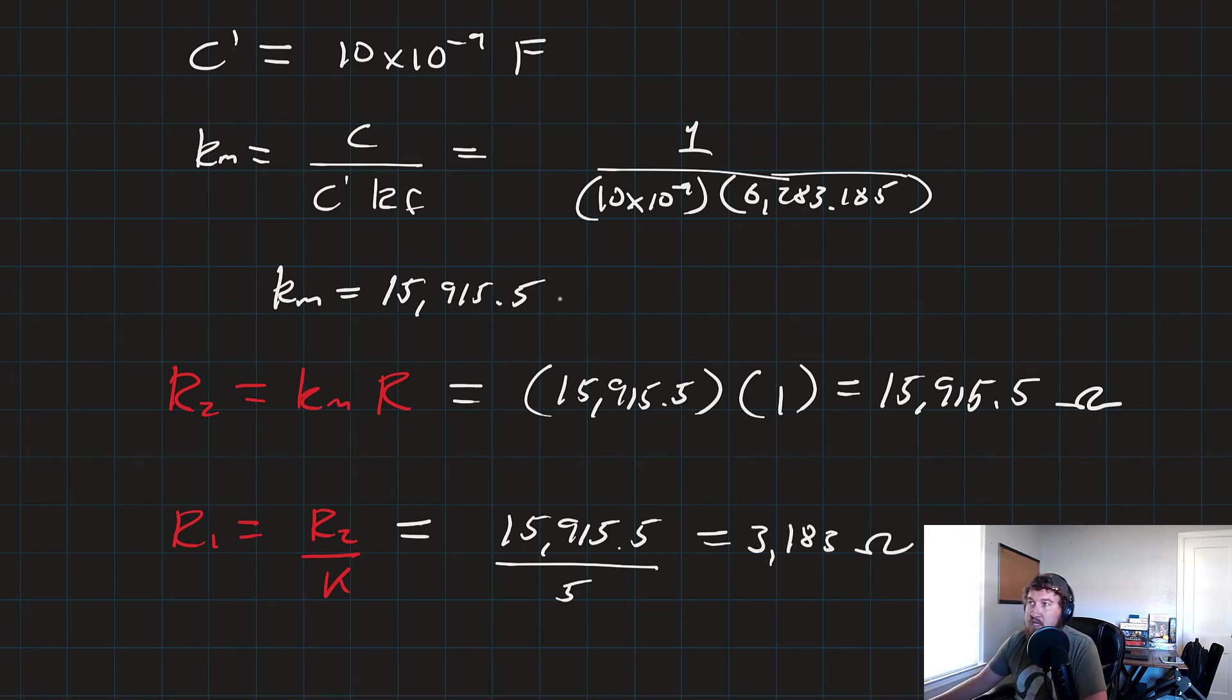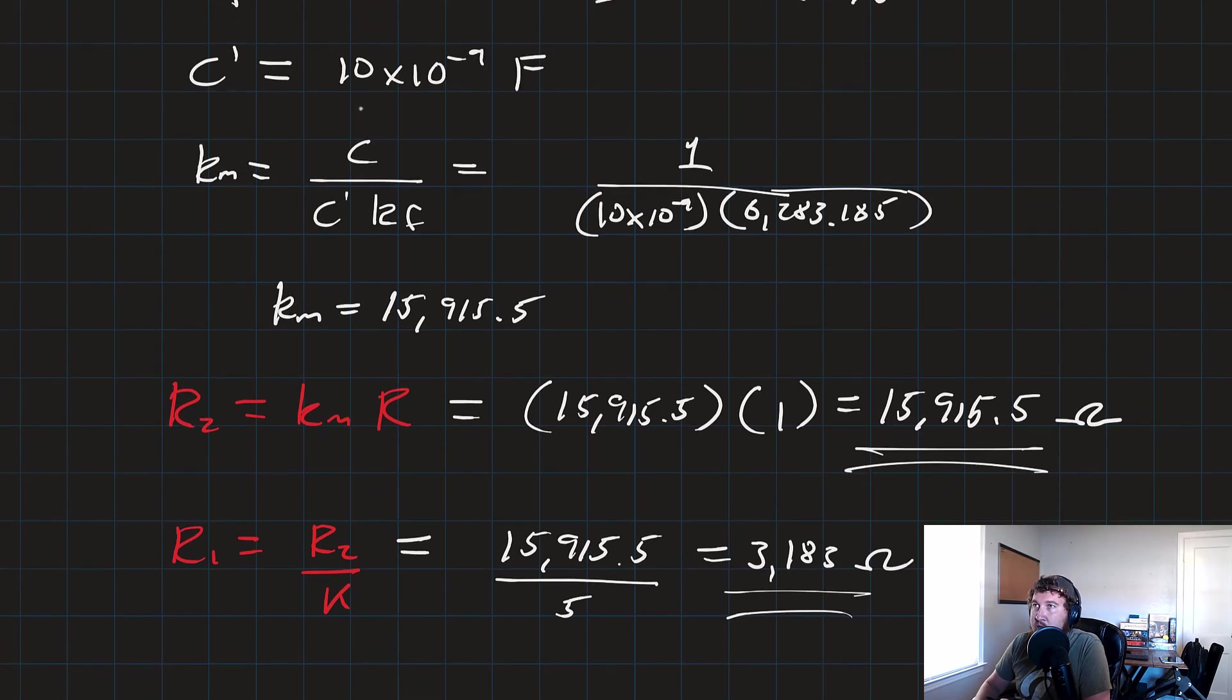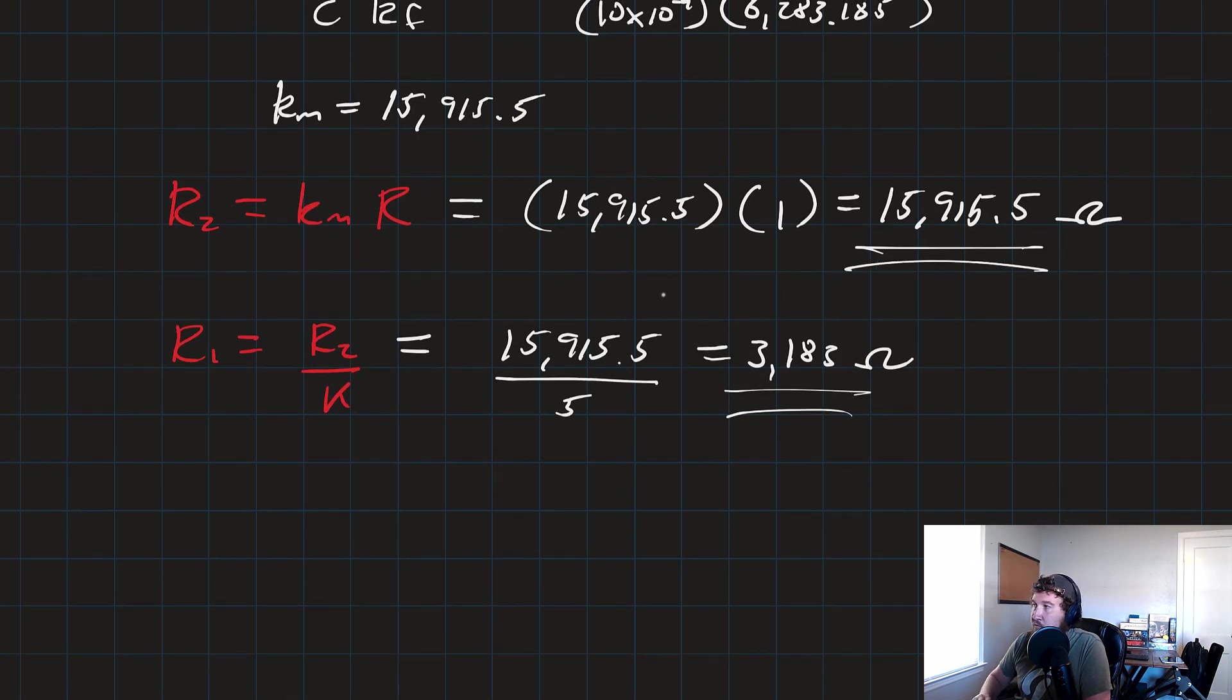So there we go. These are more realistic, real-world values for resistors that you could use in your 1 kHz filter. Once we picked our capacitor, getting a gain of 5 is still like you could do 5 ohms over 1 ohm, but these values jive with the value of our capacitor a little bit better. So you're going to get better performance in real life from these capacitor values. Let's go ahead and draw this out before we call it a day.